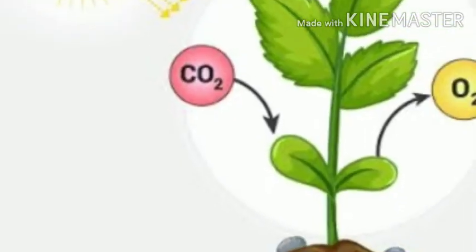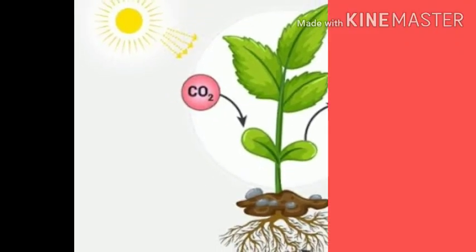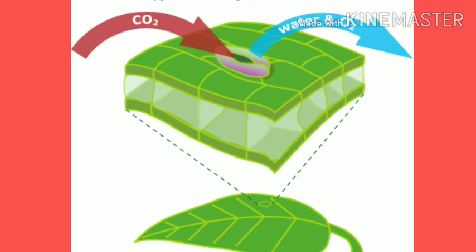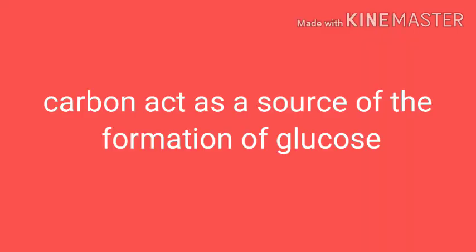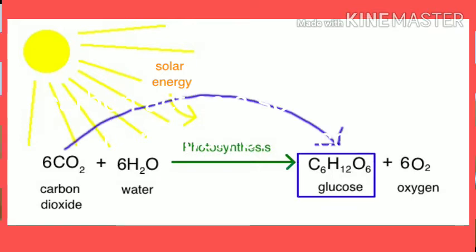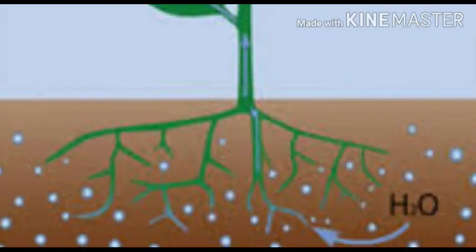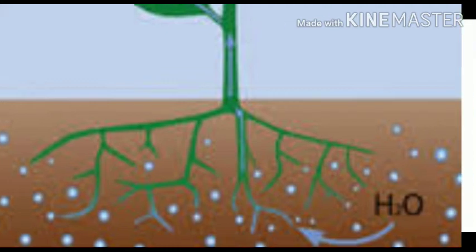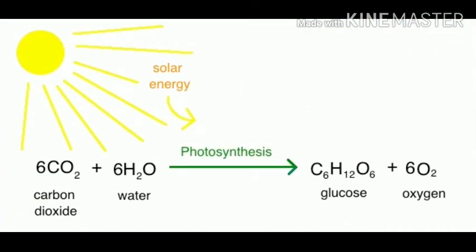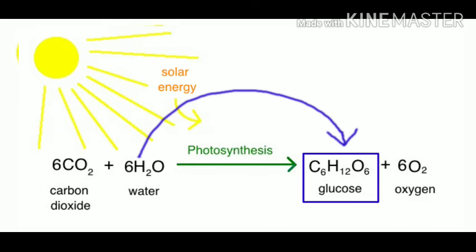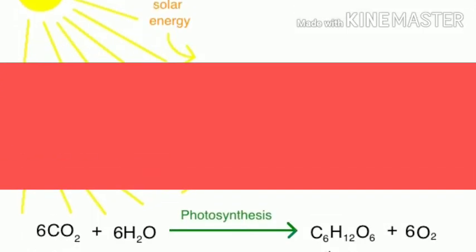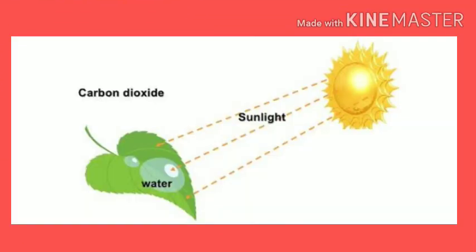Plants get carbon dioxide from the atmosphere. Carbon dioxide enters the leaf through stomata and acts as a source for the formation of glucose. Plants get water from their roots. Water is absorbed by the roots of the plant and is also a source of hydrogen for the formation of glucose. Plants trap sunlight using chlorophyll, which is the source of energy for photosynthesis.